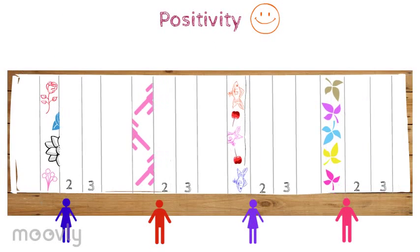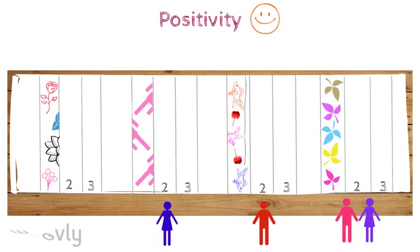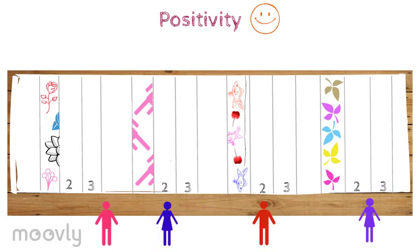Everyone moves one seat to the right. The person sitting on the far right now moves to the far left. Now everyone sits behind two new strips that he can draw on.